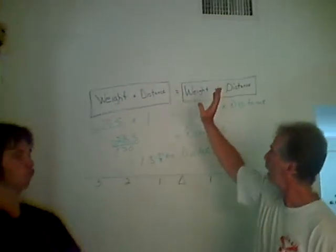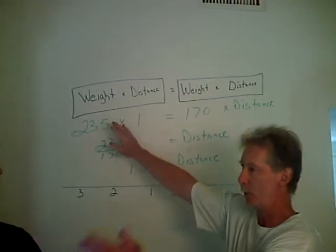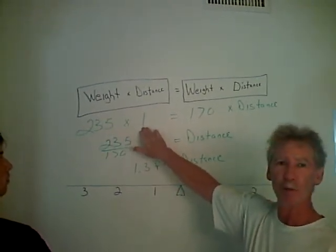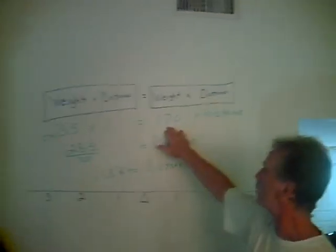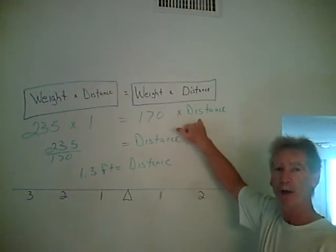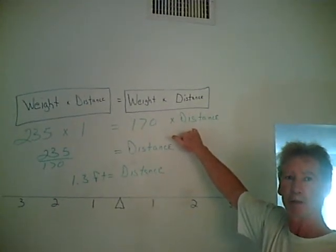To find out where the other person has to stand on the beam, we find the weight of Jeffrey, which is 235, and he's going to stand one foot away from the center. I weigh 170 pounds, and using this mathematical formula, we're going to find out how far away from the center I need to stand to make this balance.